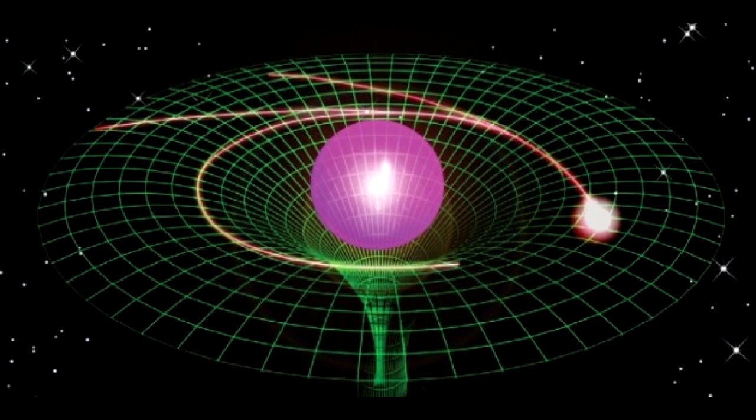Space-time is actually the reason we have gravity, or at least we think it is. Objects with mass actually create dips in space-time, like you see here with this planet, and things orbit planets because they are rolling along these dips, like the moon here.